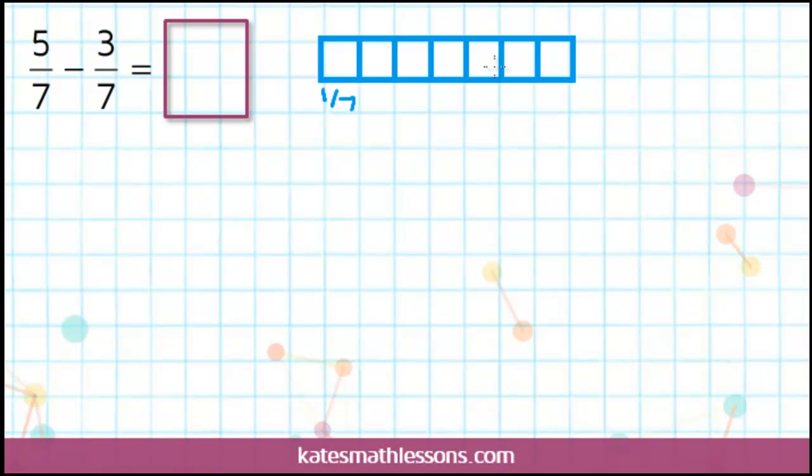So let's shade in 5 out of 7 to represent the first fraction. This shaded part represents 5 7ths. I have 5 out of 7 boxes shaded.